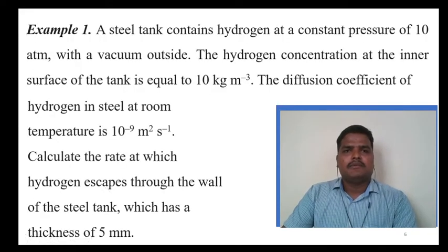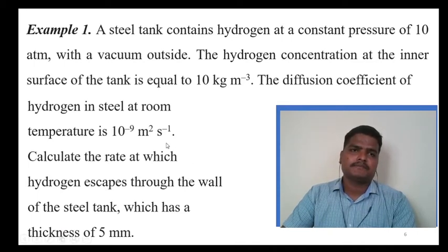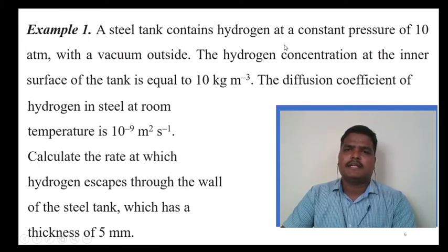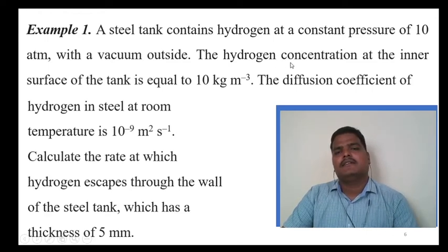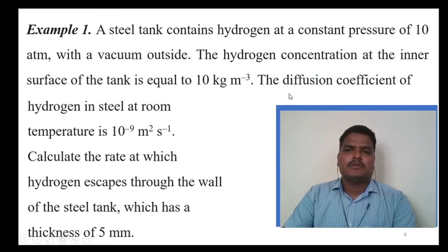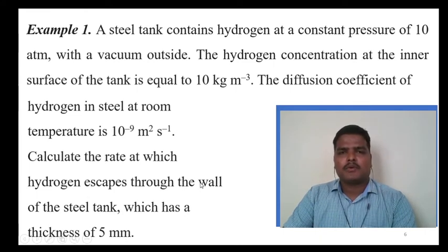We will solve one interesting problem. A steel tank contains hydrogen at a constant pressure of 10 atmospheres with vacuum outside. The hydrogen concentration at the inner surface of the tank is 10 kg per meter cube. The diffusion coefficient of hydrogen at one temperature is 10^-9 meters squared per second. Calculate the rate at which hydrogen escapes through the wall of the steel tank, which has a thickness of 5 millimeters.